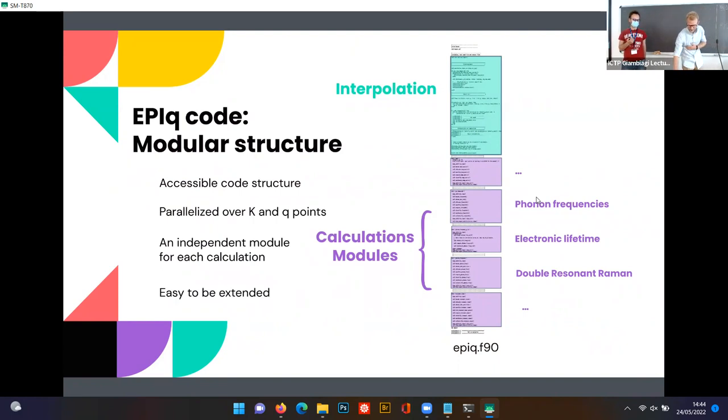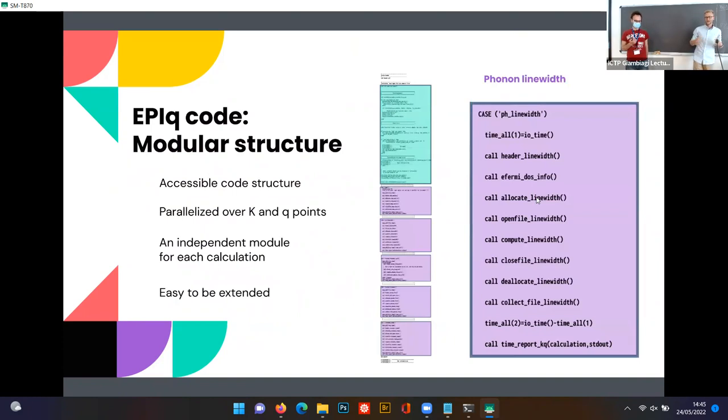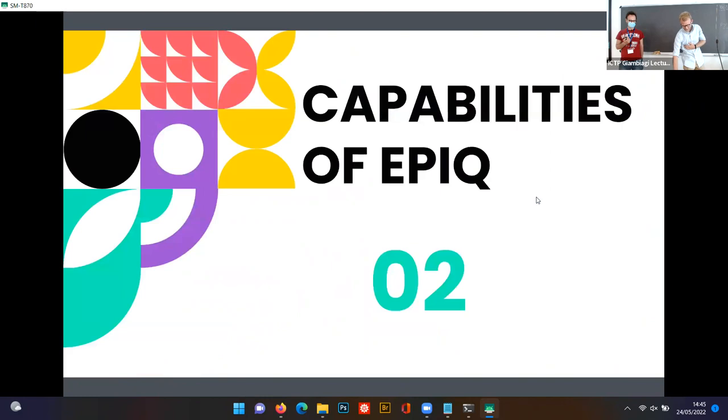On the right of the slide you can see the main driver of the source code and as you can see it's quite straightforward. In the first part you have the interpolation that a developer shouldn't care about because it's already implemented. Afterwards you find all the possible calculations that are already implemented and each module is quite easy. It's meant to be extended, this code, and this structure is meant to facilitate this procedure.